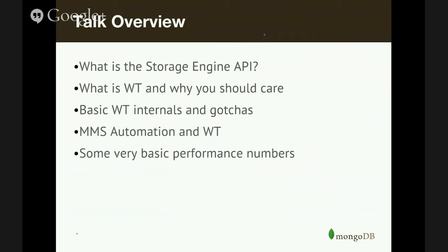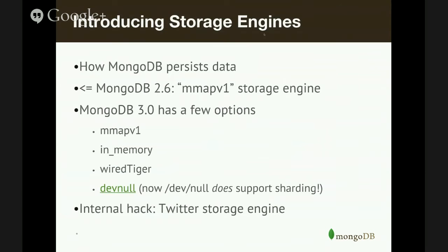So what is a storage engine? What is the whole storage engine API about? Well, a storage engine is how MongoDB persists your data. Up to MongoDB 2.6, the storage engine was what we called MMAP v1. Back then there was no notion of a storage engine at all — it was just the only way that MongoDB persisted data. MongoDB 3.0 introduces a pluggable API that you can stuff new storage engines into. MongoDB 3.0 comes shipped with a few different storage engine options: the classic MMAP v1, which is essentially the same storage engine from MongoDB 2.6 with some significant improvements.